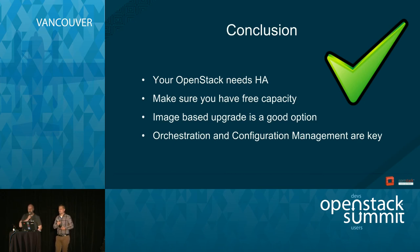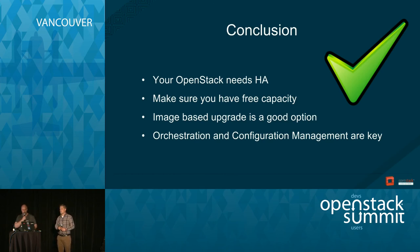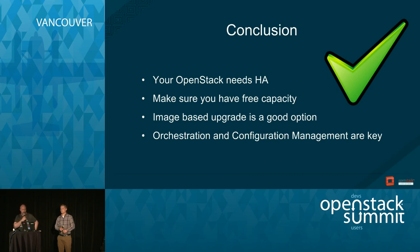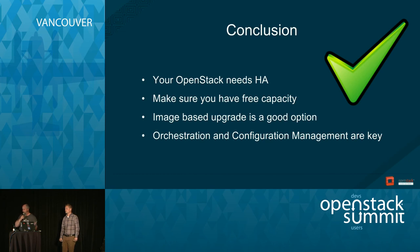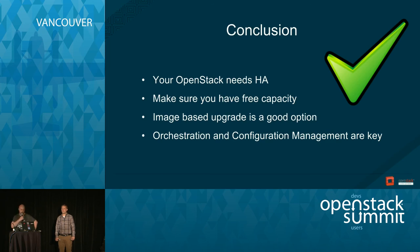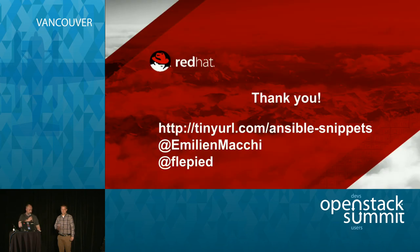In conclusion, four things to remember: First, for minimal interruption you need HA in your OpenStack deployment architecture. Second, to evacuate VMs you need free capacity — compute it before launching an upgrade. Third, image-based deployment is very useful but optional — package managers can work too. Fourth, orchestration and configuration management are key; without them, upgrades will be very difficult.